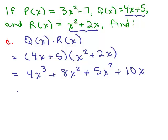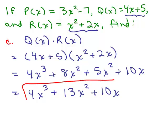And then combine our like terms to get 4x³ + 13x² + 10x. And there we have Q(x) times R(x).